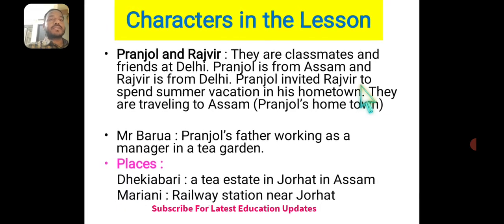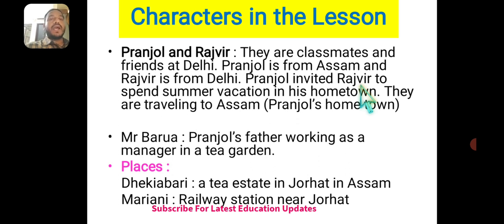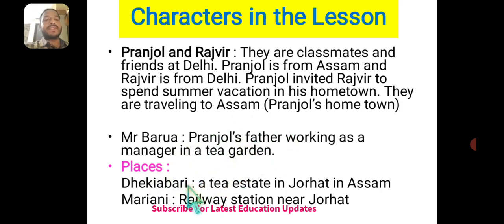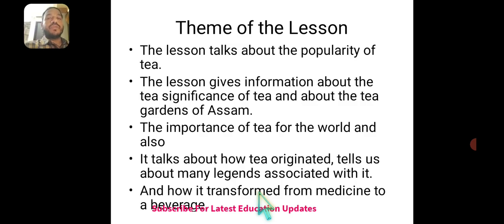Now let's look at the characters present in the lesson. We have two main characters: Pranjol and Razivar. They are classmates and friends in Delhi. Pranjol is from Assam and Razivar is from Delhi. Pranjol invited Razivar to spend summer vacation in his hometown in Assam. They are traveling to Assam. Mr. Bawra is Pranjol's father, working as a manager in a tea garden. The places in the lesson include Dekhiabari, a tea estate in Zorhath in Assam, and Mariani, a railway station near Zorhath.